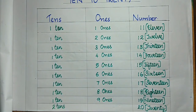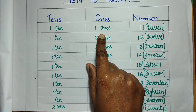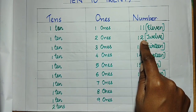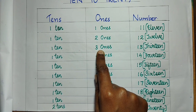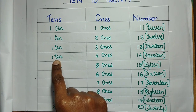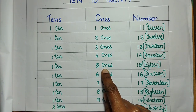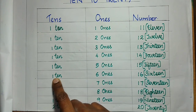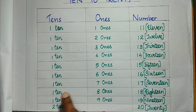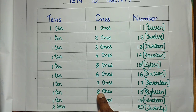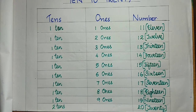So, what have we discussed today? 1 ten and 1 one is 11. 1 ten and 2 ones is 12. 1 ten and 3 ones is 13. 1 ten and 4 ones is 14. 1 ten and 5 ones is 15. 1 ten and 6 ones is 16. 1 ten and 7 ones is 17. 1 ten and 8 ones is 18. 1 ten and 9 ones is 19. And 2 tens is 20.